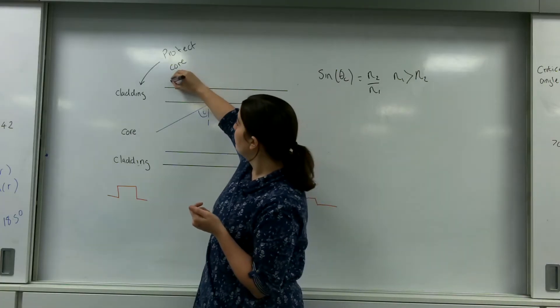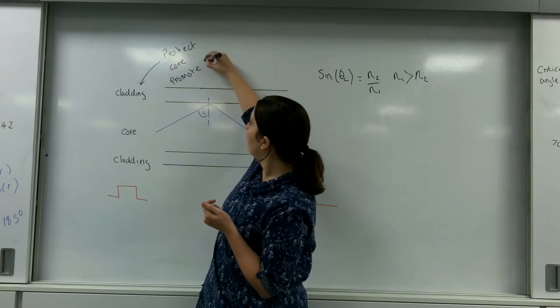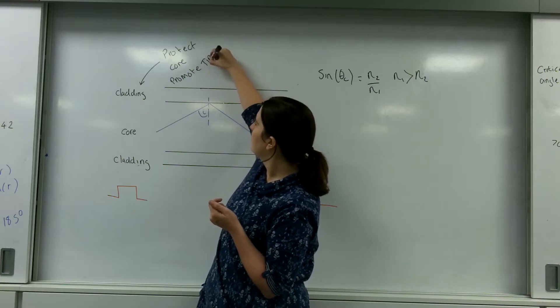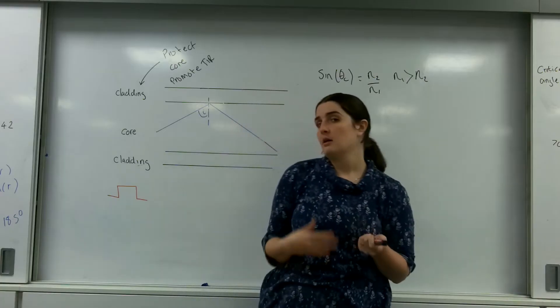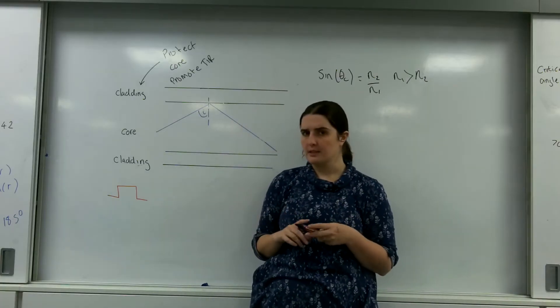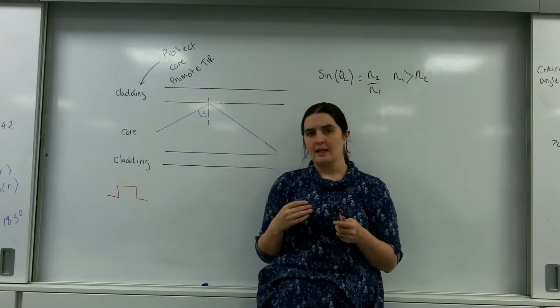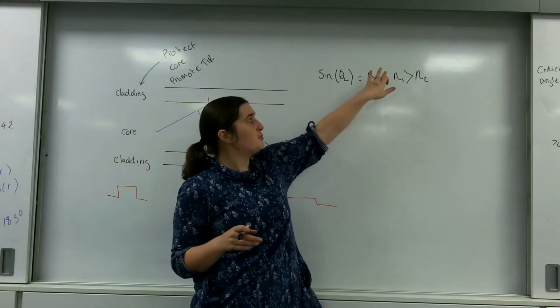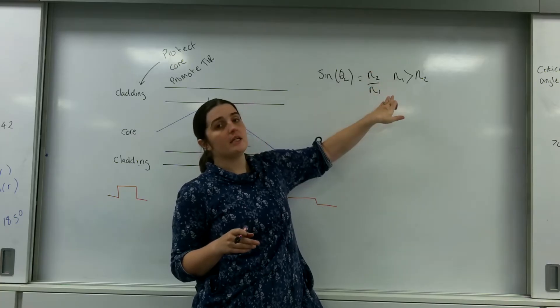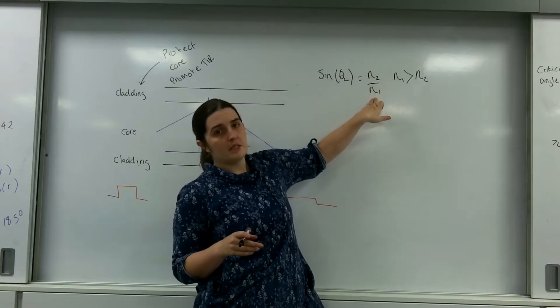So it's to promote TIR through choice of the critical angle. So claddings can come in all sorts of different refractive indexes. But the job is that, very specifically, they have a much smaller or a smaller refractive index than the material, the core.